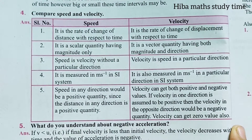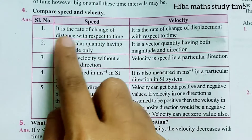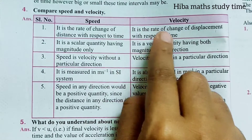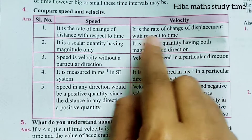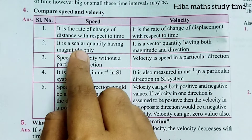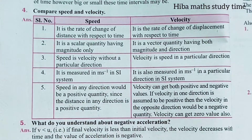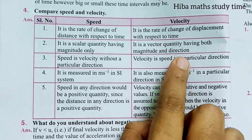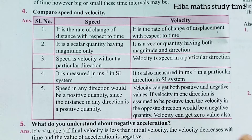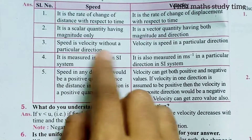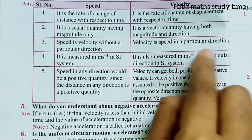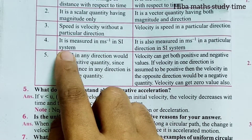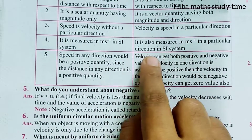Fourth question: Compare speed and velocity — this is a 5-mark question. Speed is the rate of change of distance with respect to time. Velocity is the rate of change of displacement with respect to time. Distance is a scalar quantity having magnitude only. Velocity is a vector quantity having both magnitude and direction.